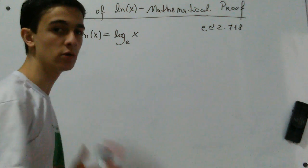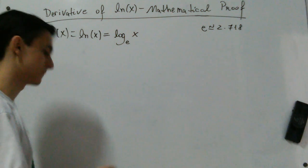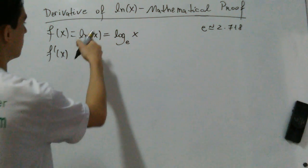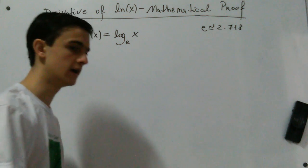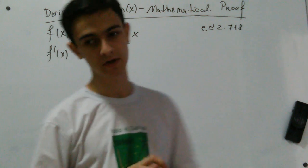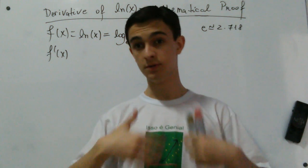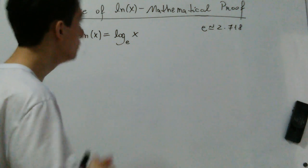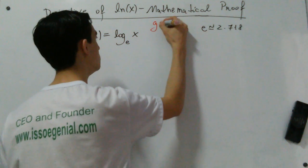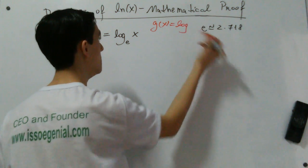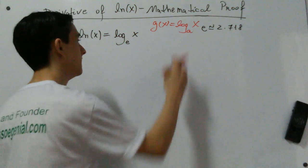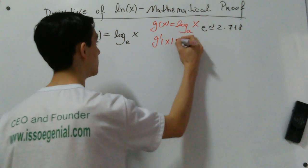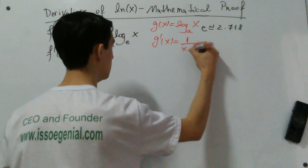It's very important to calculus, as we have already seen in previous videos. We want to know f prime of x, the derivative of this function. If you remember our previous videos in which we mathematically proved the derivative of logarithmic functions, we proved that if we have g of x equal to log base a of x, where a is just a constant, then g prime of x is equal to 1 over x natural log of a.